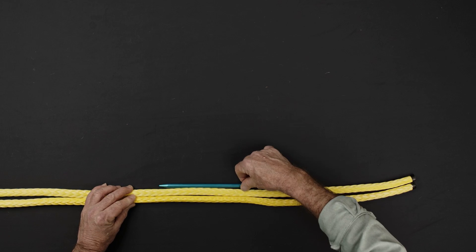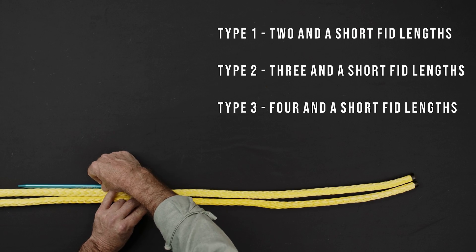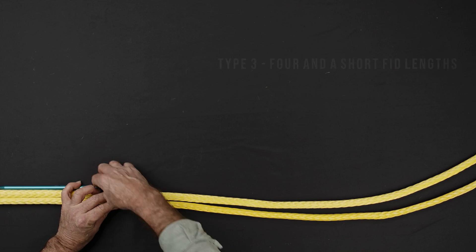Using an appropriately sized fit, make a first eye mark in accordance with the rope type. This video shows type 2 products with the first eye mark made 3 and 1 short fit lengths from the end of the rope.